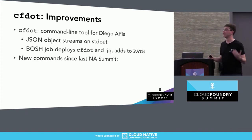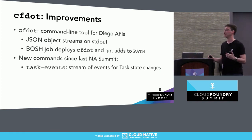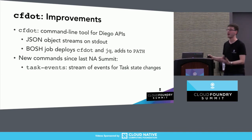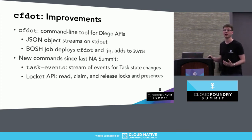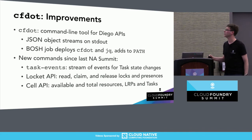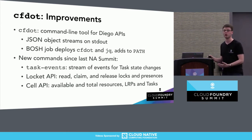When I talked about this at Summit last time, we had just reached parity with all the BBS APIs in terms of having CFDOT commands for those. Since then, we've added a command that gives you a running stream of all events about tasks happening in your environment — similar to the LRP events command for monitoring desired and actual LRPs. We also added commands to interact with the Locket API, so you can inspect locks and cell presences or manipulate them. And we've added commands to inspect the state of individual cells or all cells in the deployment — getting a snapshot of available or total resources and how many instances each cell is running.